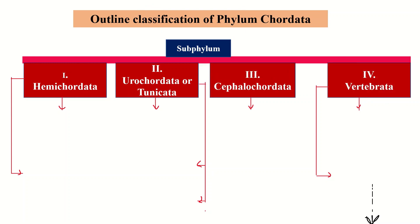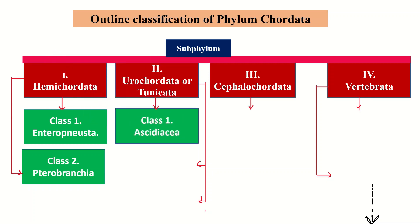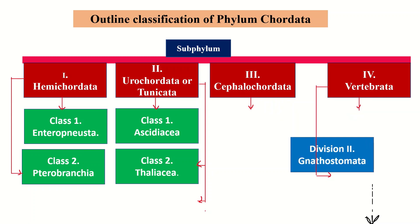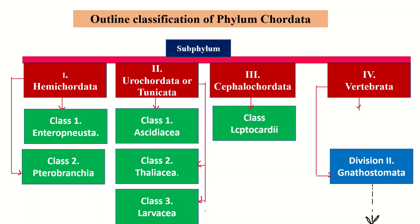Hemichordata is divisible into two classes: class Enteropneusta and class Pterobranchia. Urochordata is divisible into three classes: Ascidiacea, Thaliacea, and Larvacea. Cephalochordata has one class, Leptocardia.